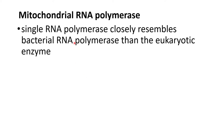Mitochondrial RNA polymerase is also present in the mitochondria and mostly resembles bacterial RNA polymerase rather than eukaryotic RNA polymerase. This RNA polymerase is also used for the synthesis of certain proteins, but most proteins are synthesized by the nuclear messenger RNA.